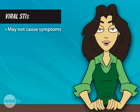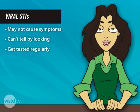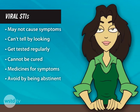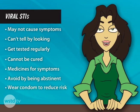Let's recap. Viral STIs don't necessarily cause symptoms, so you may not know you are infected — and you certainly can't tell if someone else is infected just by looking at them. So if you are sexually active, you need to go to the doctor regularly to be tested. Once you have a viral STI, you will have it for the rest of your life. Unlike parasitic and bacterial STIs, there is no cure for viral STIs. But there are medicines that can help keep you healthier and reduce the symptoms, especially if the infection is diagnosed early, although they cannot make the infection leave your body. All viral STIs can be avoided by not engaging in any sexual activity — that is, by being abstinent from all types of sexual contact. If you do have sexual contact, you can reduce your risk of infection by using latex condoms correctly during every sexual encounter.